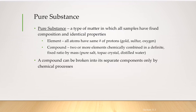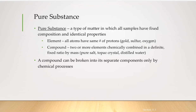Pure substances are subdivided into elements and compounds. For example, if you take a gold atom, it is going to have exactly the same number of protons. Similarly, any oxygen atom will have exactly the same number of protons.